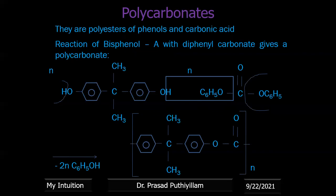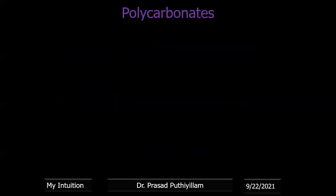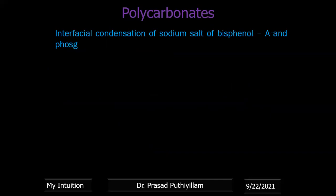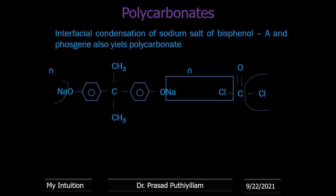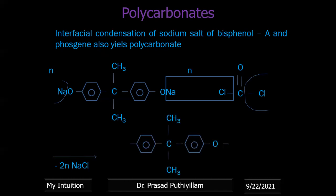Polycarbonate contains ester groups involving phenol and carbonic acid. It can also be prepared by interfacial condensation of the sodium salt of bisphenol A with phosgene (ClCOCl). In this reaction, sodium chloride is condensed out on both sides, and the chain reaction propagates, giving the same repeating unit — polycarbonate.